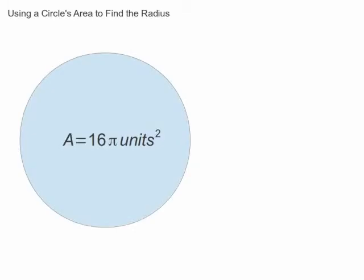If you know a circle's area, you can find the radius by plugging the area into the same formula and solving for r. If you're looking for the diameter instead, just multiply the radius's length by 2.